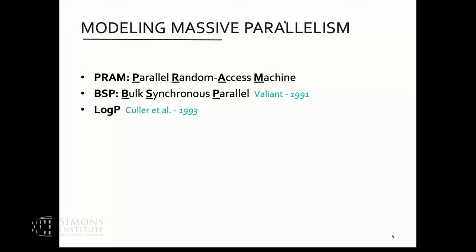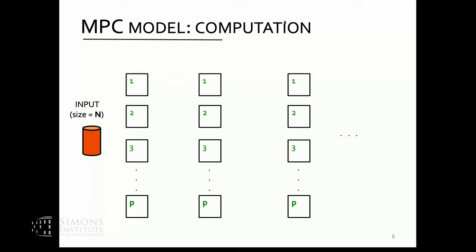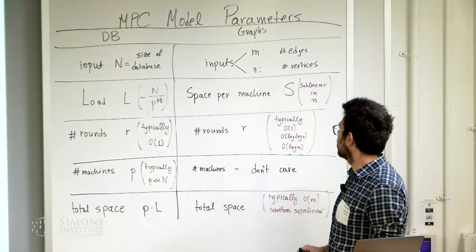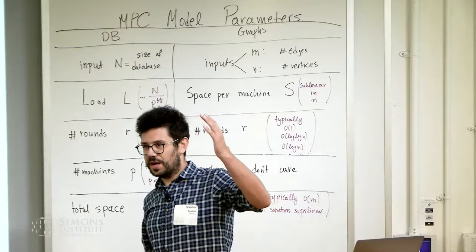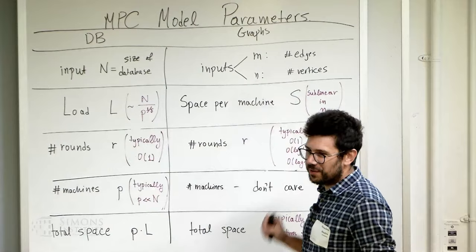There has been a lot of work on how we can model massive parallelism, starting with the PRAM model, then going to the Bulk Synchronous Parallel model of Valiant, the local model, and then as MapReduce was introduced there were a bunch of models to theoretically understand how MapReduce computation works. We use N to denote the size of the database. When talking about graphs, we use M and N as the number of edges and vertices, but here I'm just talking about the total size of your relational tables.